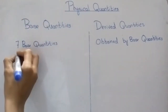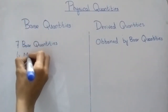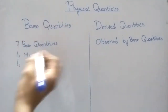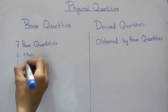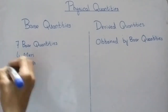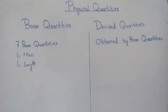Examples of base physical quantities include mass and length. The other base physical quantities are time, electric current, intensity of light, temperature, and amount of substance.